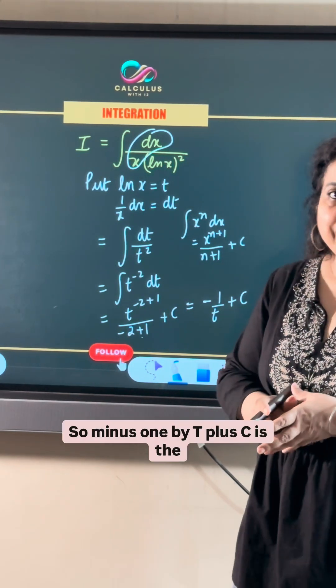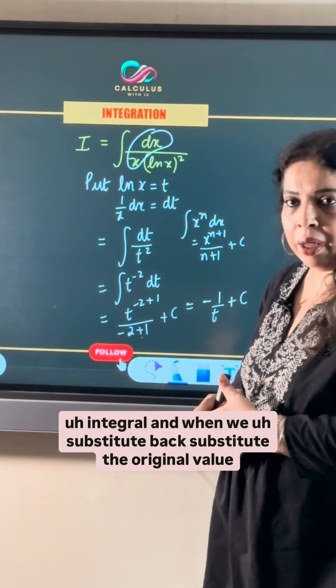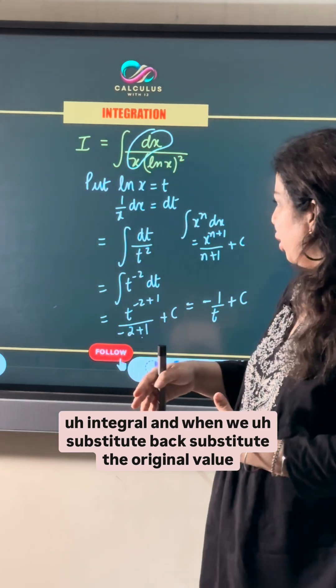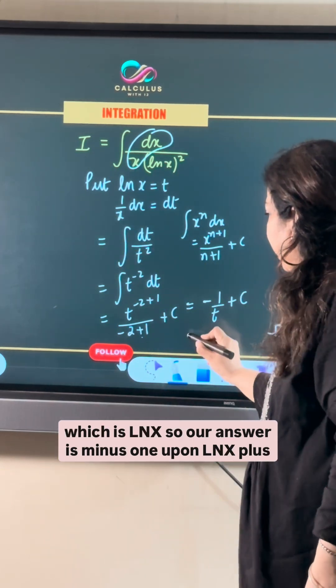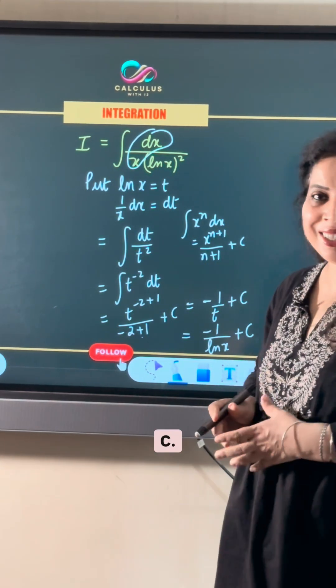So minus 1 by t plus c is the integral, and when we back substitute the original value which is ln x, so our answer is minus 1 upon ln x plus c.